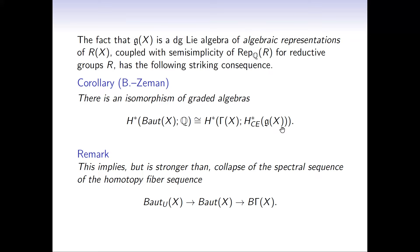Can you say why semisimplicity allows you to replace the cochains? Because every chain complex of semisimple representations is split—it's chain homotopy equivalent to its own homology. You apply that to the Chevalley-Eilenberg cochains and write down a chain homotopy equivalence. That gives you the statement additively. To get the ring structure, you use the homotopy transfer theorem for A-infinity algebras.